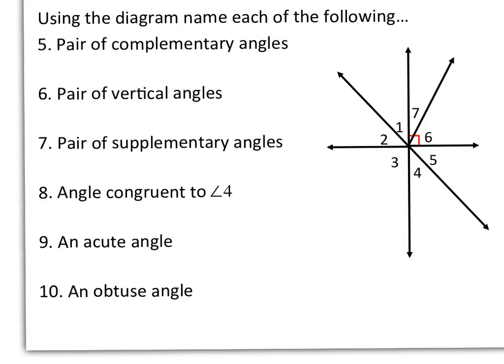We're going to use the diagram on the right to answer a few questions. So in 5, we want to name a pair of complementary angles. And there are a few examples here. I'm going to go with the most obvious though, angle 7 and angle 6. So remember, complementary angles are angles whose measures add up to 90 degrees. Number 6, we want to name a pair of vertical angles. So I could say angle 2 and angle 5. Notice how I'm using the angle symbol when I name each of these angles.